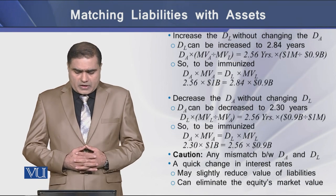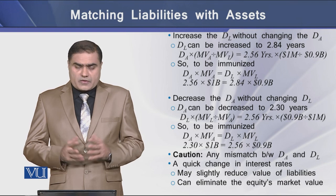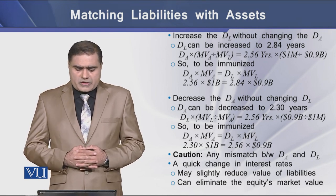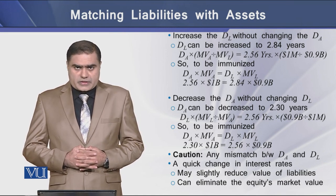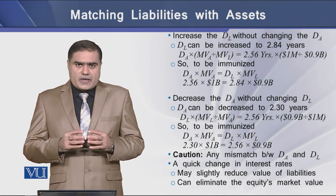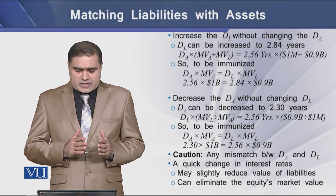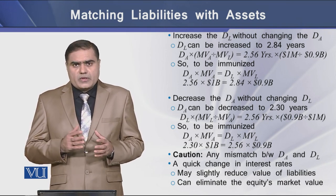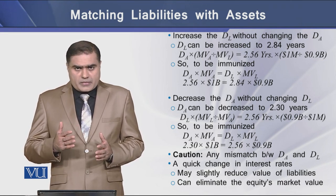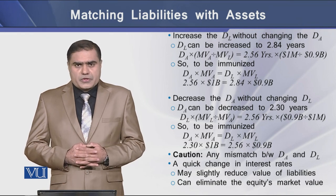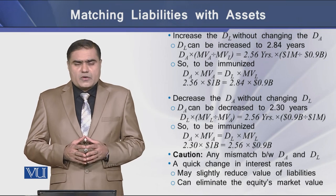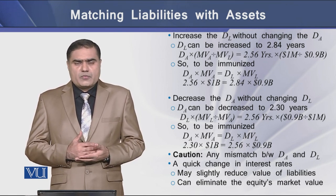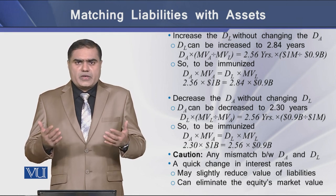The first approach is to increase the duration of liabilities without changing the duration of assets. According to this second consultant, the bank should increase the duration of liabilities to 2.84 years. In this way, the bank can be immunized if the duration of assets — 2.56 multiplied by $1,000,000,000 — equals the duration of liabilities multiplied by the market value of the liabilities. With a duration of liabilities at 2.84 multiplied by the market value of liabilities, both sides of the balance sheet will have equal duration.